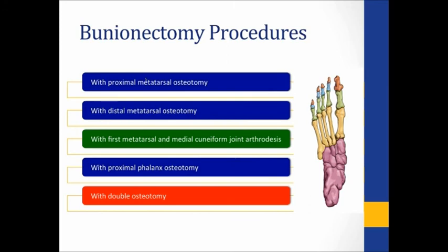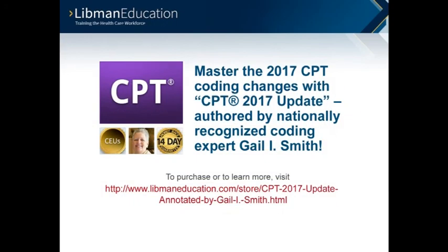Remember, the general simple bunionectomy is 28292. The proximal metatarsal osteotomy is code 28295 — because of the metatarsal, the doctor is taking a piece of the foot bone, the yellow portion on screen. If they go into the distal towards the toe and take a piece, that's code 28296. The green first metatarsal and medial cuneiform joint arthrodesis — that's a fusion, and you'll find that in the documentation. The next one, proximal phalanx osteotomy — we are now in the toe, not the foot bones — is 28298. And then the worst case scenario, when they have to do multiple double osteotomies, is 28299.